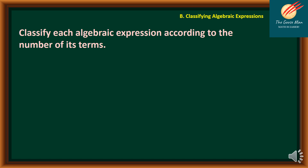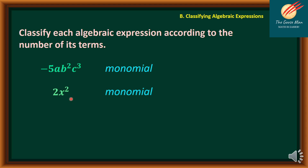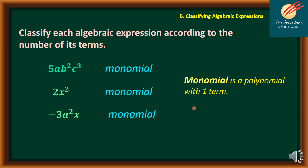Algebraic expressions can be classified according to the number of terms. For example, negative 5ab squared c squared is considered one term because the operation between all parts is only multiplication — so this is a monomial. Likewise, 2x squared and negative 3a squared x are also monomials. To summarize, a monomial is a polynomial with one term only.